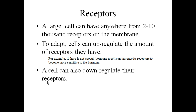Downregulation is a decrease in receptors, and it makes the cell less sensitive to the hormone. For example, RU486, which is like the morning-after pill, blocks receptors for progesterone. Progesterone is responsible for preparing the uterine lining for implantation. So if you block those receptors or cause downregulation, you can prevent implantation of the embryo.